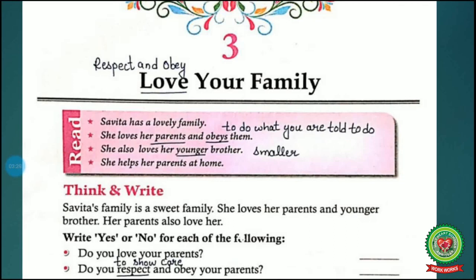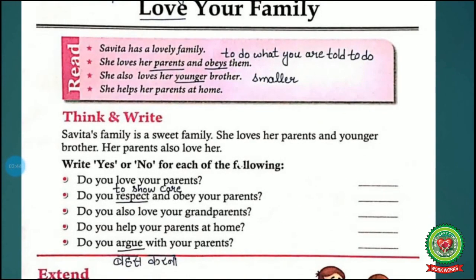The next line is: she helps her parents at home. Savita knows the value to love family and she helps her parents at home. Now the next part is Think and Write. Savita's family is a sweet family. She loves her parents and younger brother, and her parents also love her. Savita respects her family and obeys her family, and in return her parents also love her. Now there are some questions and you have to answer in the form of yes or no, so read these questions carefully.